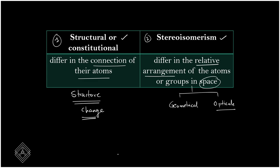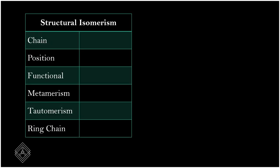Structural isomers fall into many different categories: chain isomers, position isomers, functional group isomers, metamerism, tautomerism, and ring-chain isomers. We will discuss each one by one with examples and learn how to identify them by name.